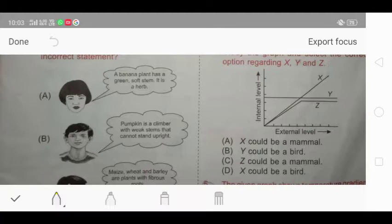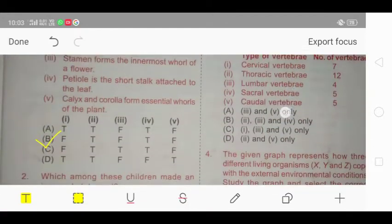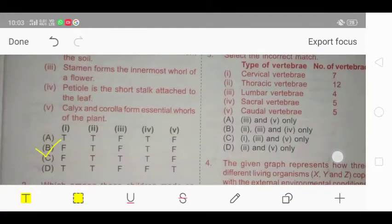First is, banana plant has a green soft stem. It is correct, and it is a herb. Yes, this statement is correct. Next, pumpkin is a climber. No, pumpkin is not a climber, it is a creeper. So this statement is wrong. As we know that B statement is wrong, the correct answer is option B for question number 2.